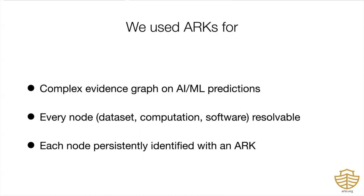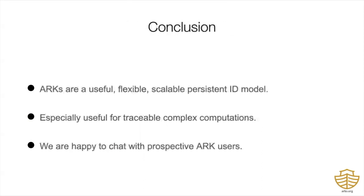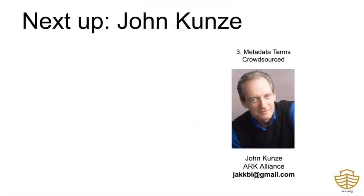To summarize, why do we use ARKs in our work? We use them as persistent IDs to robustly represent the data in our evidence graphs and all our results, computations, and primary data. Their metadata is flexible, and there's a large ecosystem of users and developers supporting them. We use ARKs for complex evidence graphs on AI machine learning predictions in biomedical research in the lab and in the clinic. Every node — every dataset, computation, software, model, hyperparameter set — is resolvable through the ARK to its contents. In conclusion, ARKs are a very useful, highly flexible, and scalable persistent identifier model, especially useful for traceable complex computations. If you're doing work in biomedical research, the predictions you make in AI have to be traceable and explainable — otherwise, you can't use them in any context where lives may depend on them. Now I'm going to turn things over to John Kunze to present our final use case.